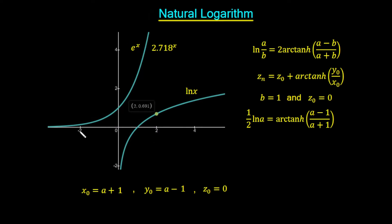We start off with the exponential function, written as e raised to the power of x. The value of e is approximately 2.718, and this goes on forever. This function e to the power of x is very important in mathematics — it's the only function that when we differentiate it, that is we find the rate of change, it gives us the exact same function e to the x. The logarithmic function, which we're going to approximate using the CORDIC algorithm, is the inverse of this exponential function.